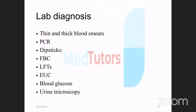We also check glucose since malaria can cause hypoglycemia, and do urine microscopy. The thick blood film is used to identify the presence and quantify the parasite load, while the thin blood film is used to identify the species of malaria — whether it's falciparum or another species. Quantification is graded as one plus, two plus, three plus, or four plus.